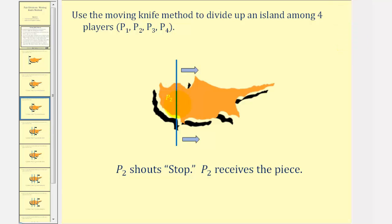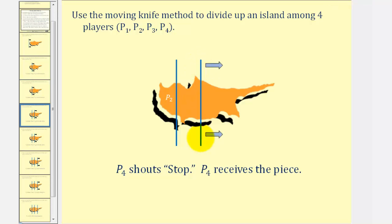The referee then begins to move the vertical line to the right. As it reaches this position here, let's say player four shouts stop. Then player four receives this piece here.